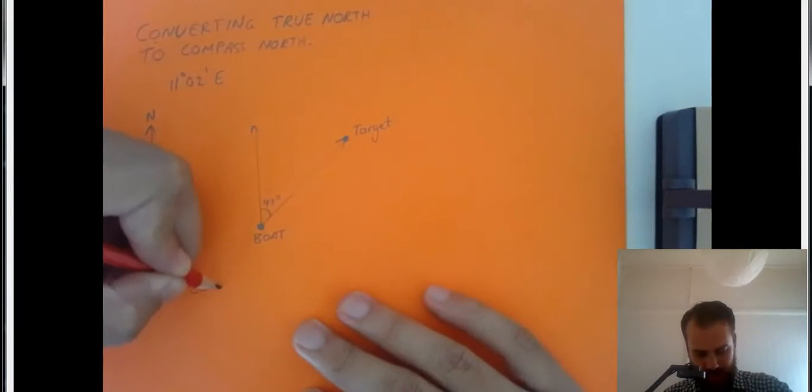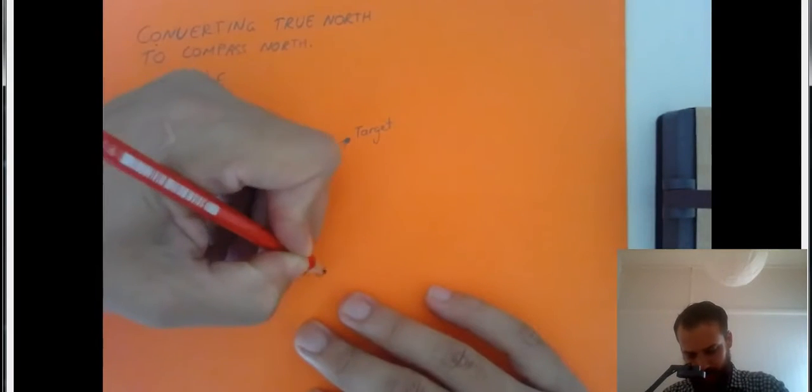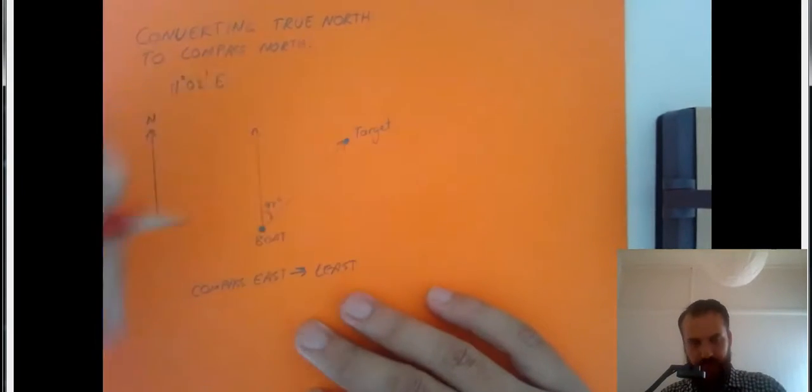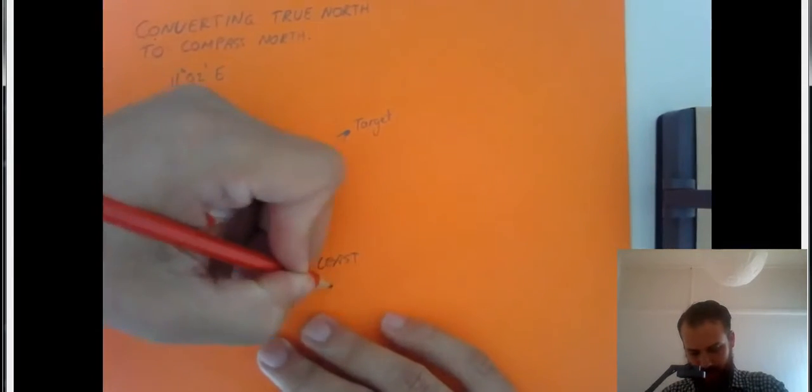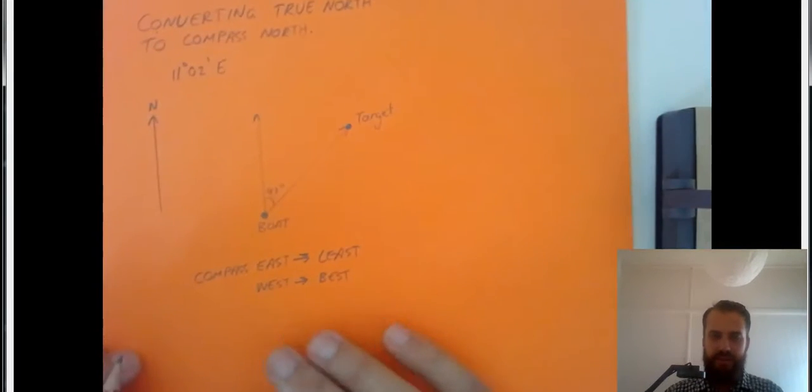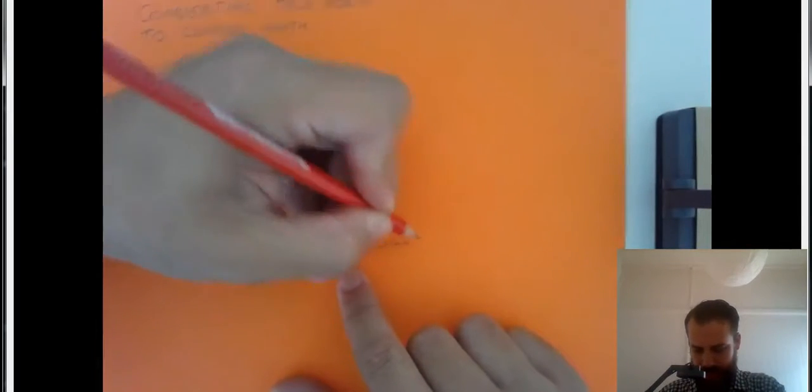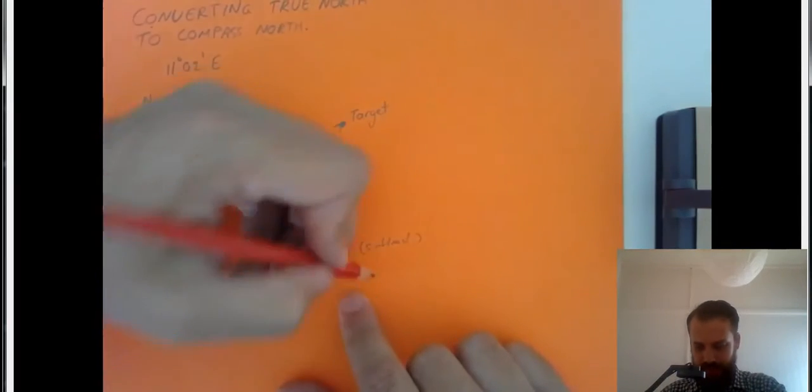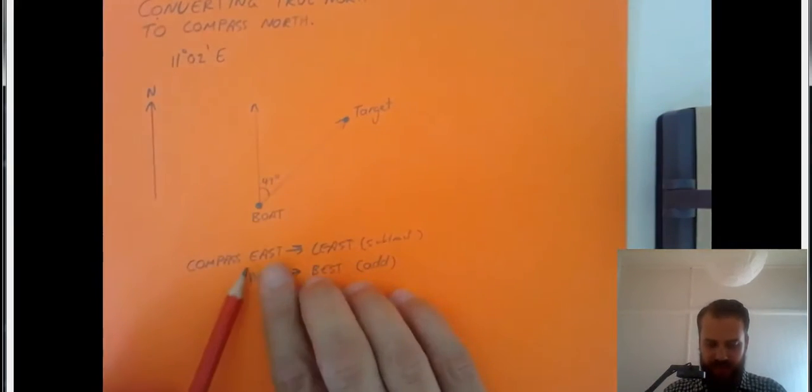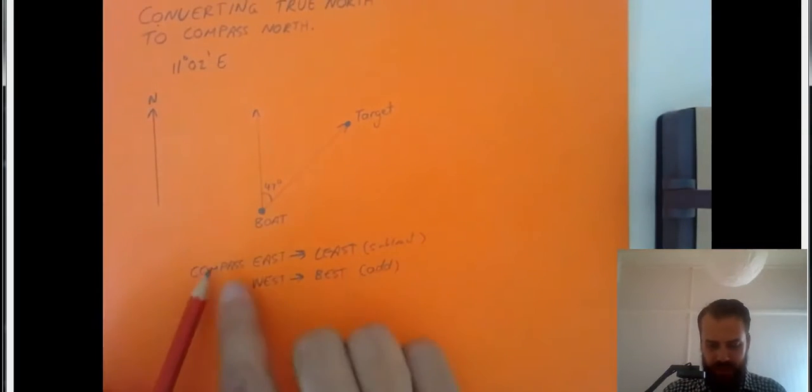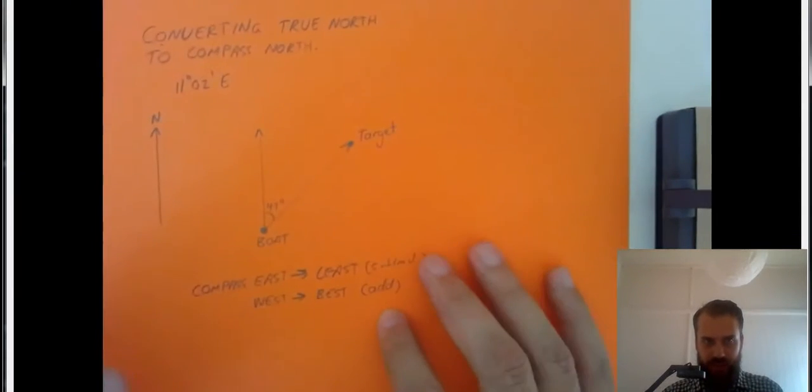Compass, east, least, west, best. So least means subtract and best means add. So if our compass variation is east, we have to subtract. If our compass variation is west, we have to add.